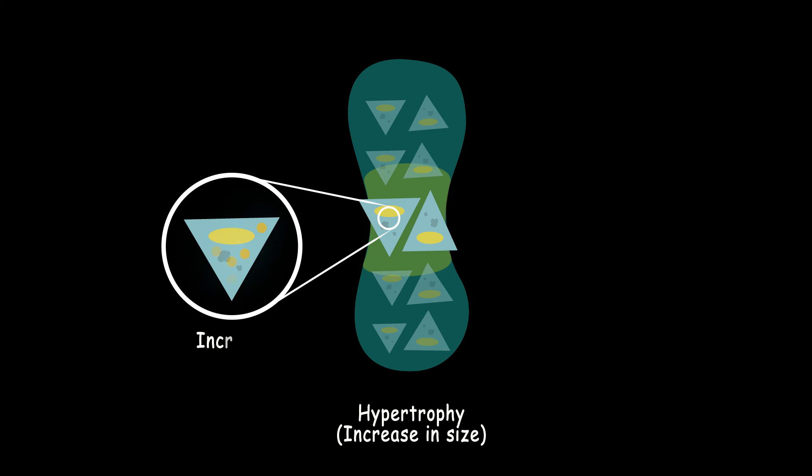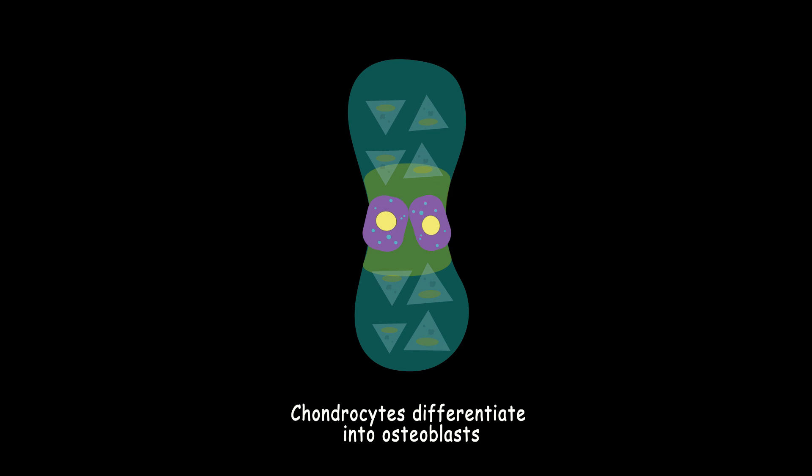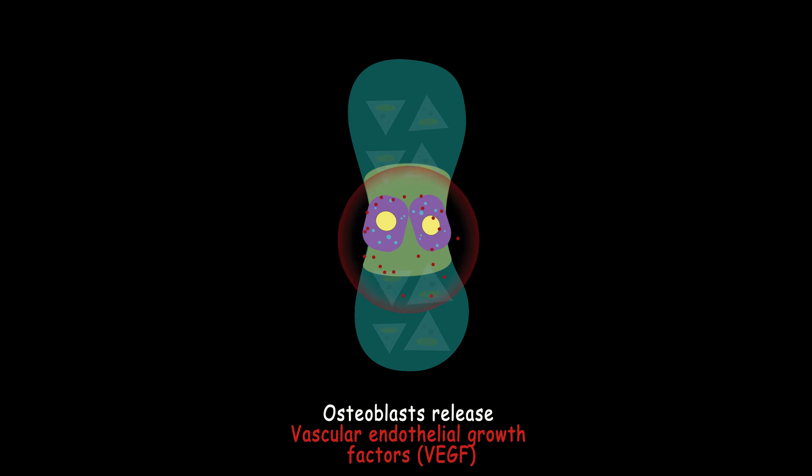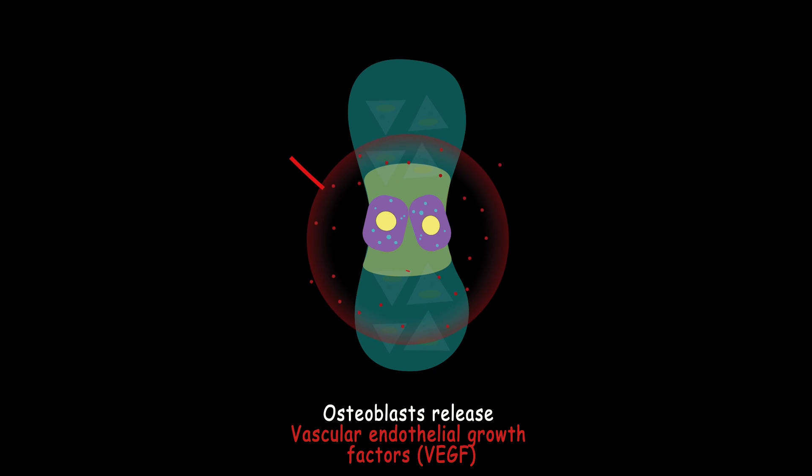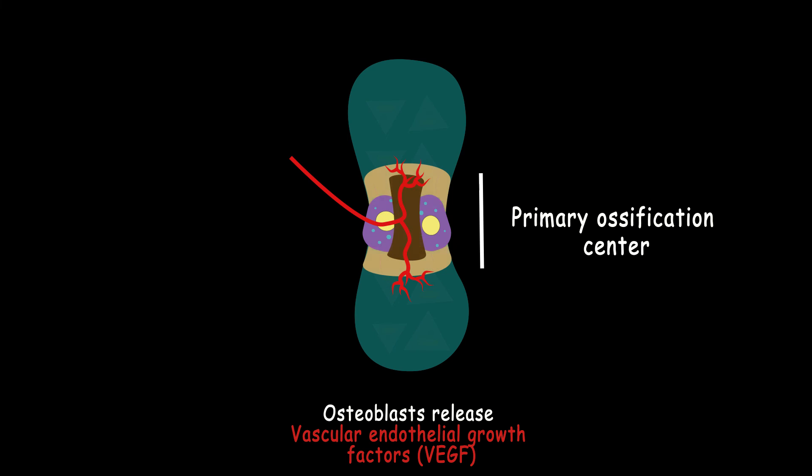At the same time, the chondrocytes at the edge of the condensation area increase Runx-2 expression and differentiate into osteoblasts which secrete collagen type 1 and make the final bone matrix. The hypertrophic chondrocytes and hypoxic osteoblasts secrete VEGF to induce blood vessels formation. This is the primary ossification center and osteoblasts make the final bone tissue.